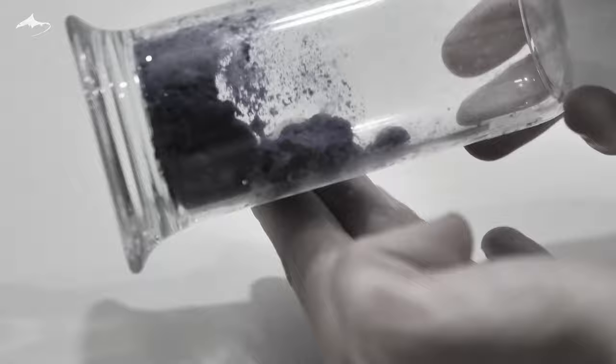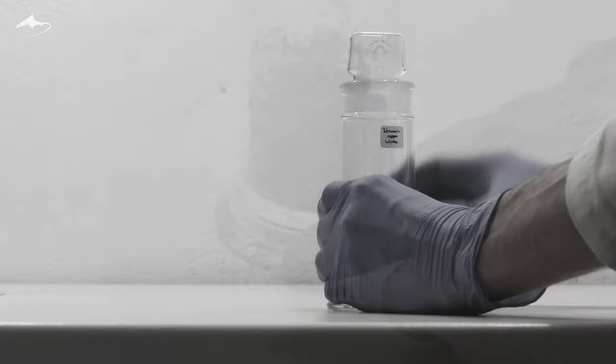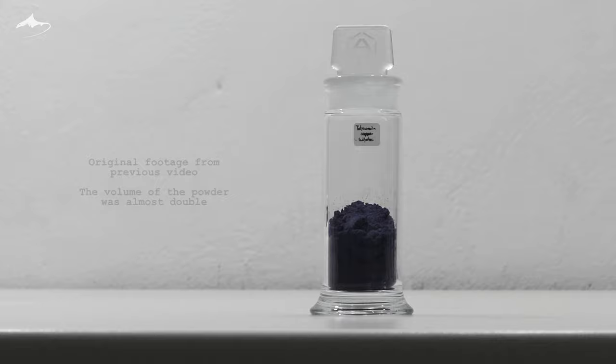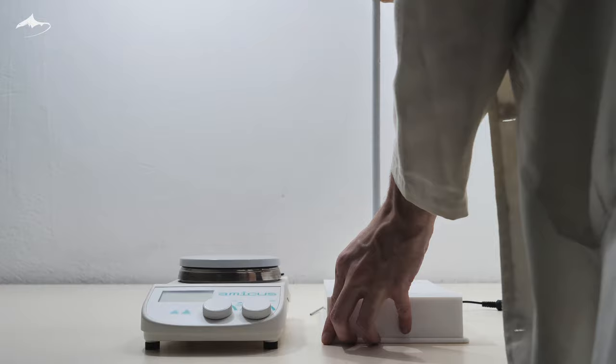So here is the jar after 16 months. If you watched the previous video you may have noticed that the volume of the powder has decreased considerably. As I mentioned in that video, the yield was over the unit as it contained lots of ethanol from the washing step. This ethanol has been lost to evaporation during storage because the container is not airtight.